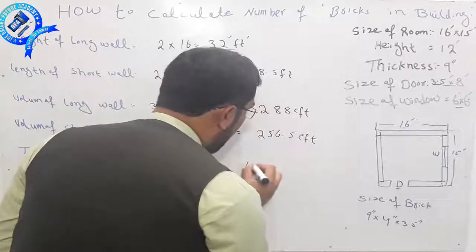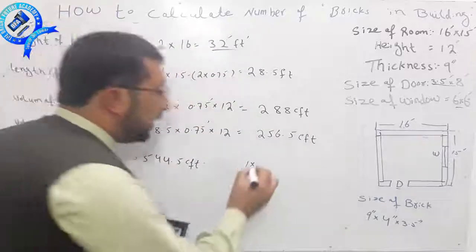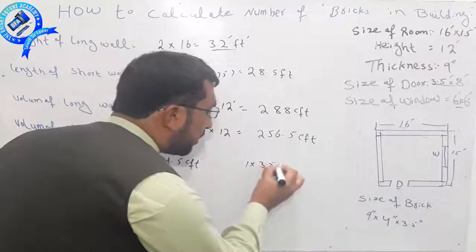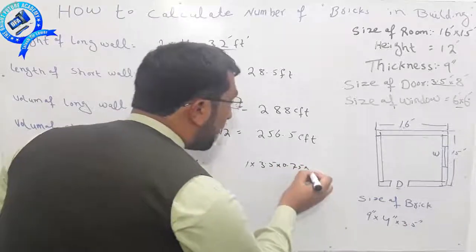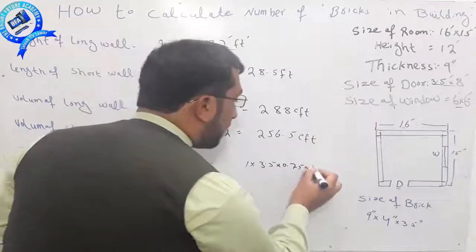The window is 4.5 feet. The length is 3.5 feet, the breadth is 0.75 feet, and height is 8 feet.